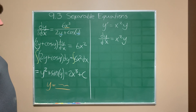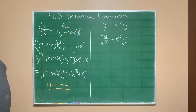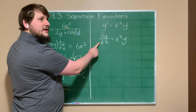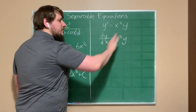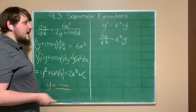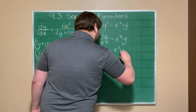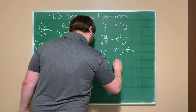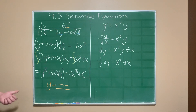Now let's solve this equation. Our goal is to move all y terms to one side and all x terms to the other. The dx is in the denominator on the left, so multiplying by dx moves it to the right. Since dy is already in the numerator, we multiply both sides by dx to get dy = x²y dx, then divide both sides by y to get (1/y) dy = x² dx.